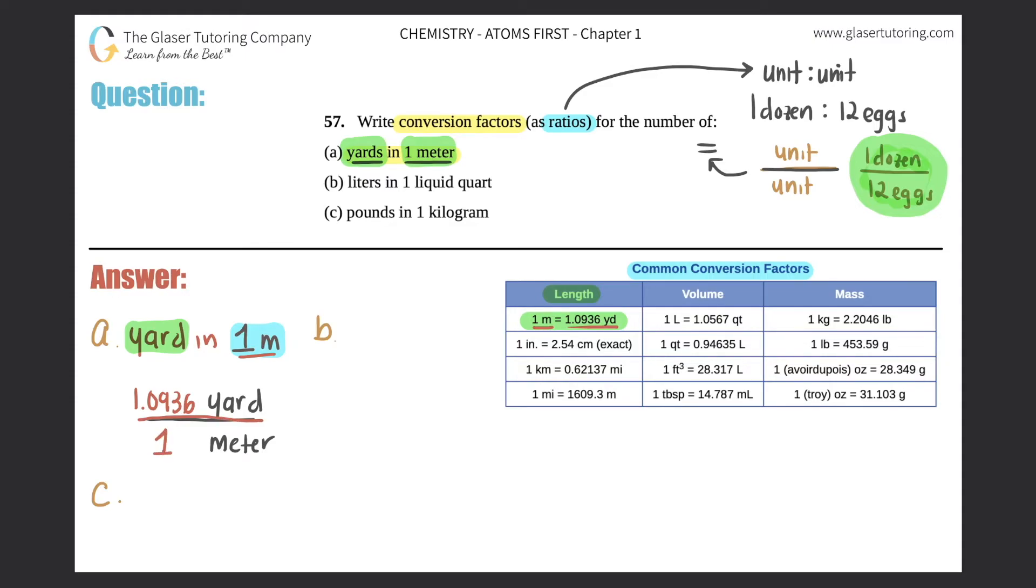So 1.0936 yards is equal to—we use that ratio—one meter. Box that answer off. That's your first answer. That's how you would write the ratio between yards in one meter.